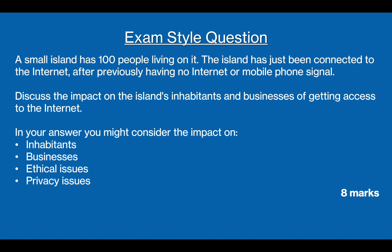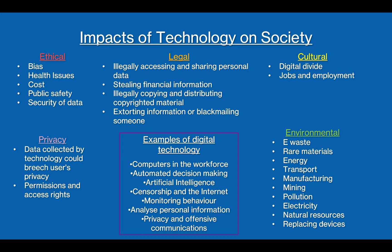So we were given the four bullet points of inhabitants, businesses, ethical issues, and privacy issues, so we need to make sure that we talk about all of these things in our answer. Let's have a look back at our summary page. This question clearly concerns ethical and privacy impacts. By discussing the inhabitants and businesses, cultural impacts are also involved. Legal and environmental impacts are not very relevant for this question, so we can generally ignore them. Looking at our examples of digital technology, I'm going to circle computers in the workplace, censorship on the internet, and privacy and electronic communications, as these are all things we could talk about in relation to this question.